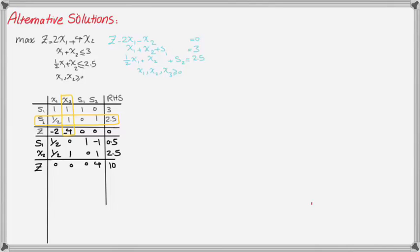This is our new table after implementing the elementary row operations. If you are not familiar with the simplex method, please refer to the video related to how to solve a linear programming problem using the simplex method. In this table, we have reached the optimality condition because everything in the row of Z is positive or zero — we don't have a negative value to continue.